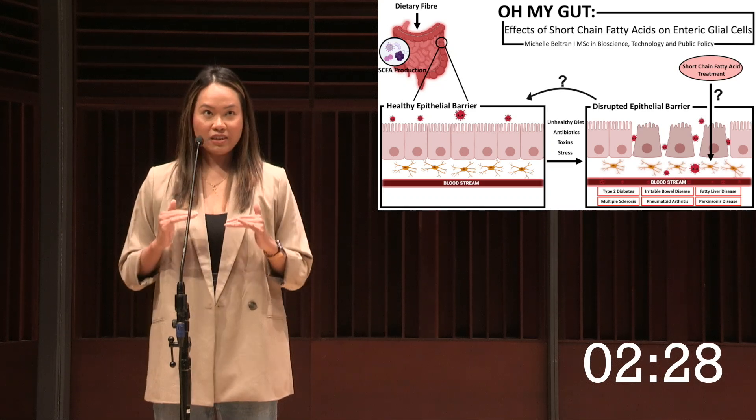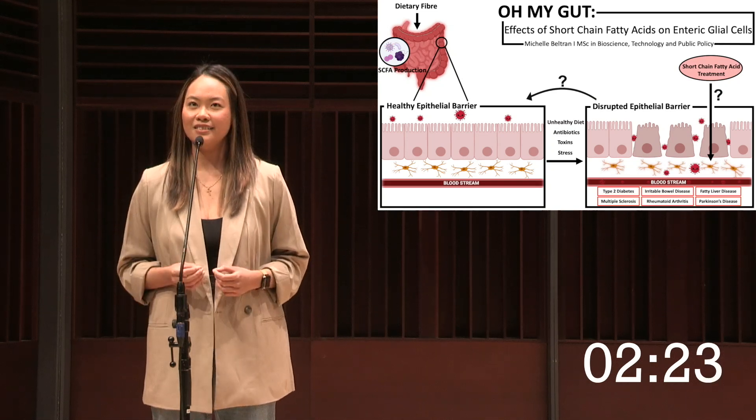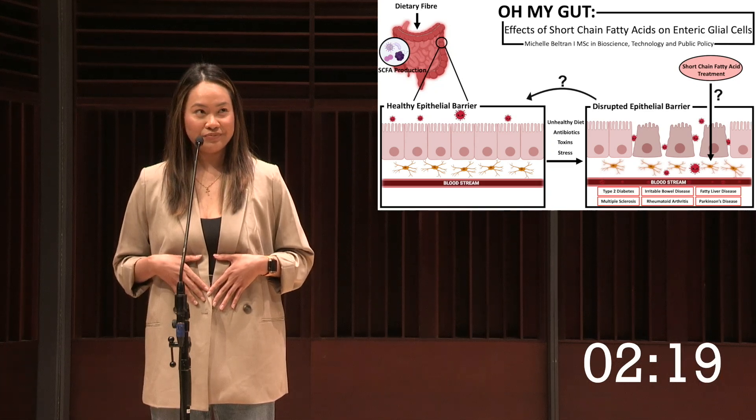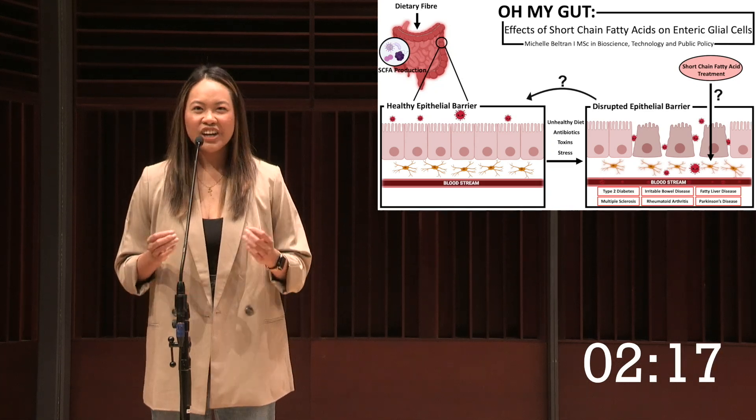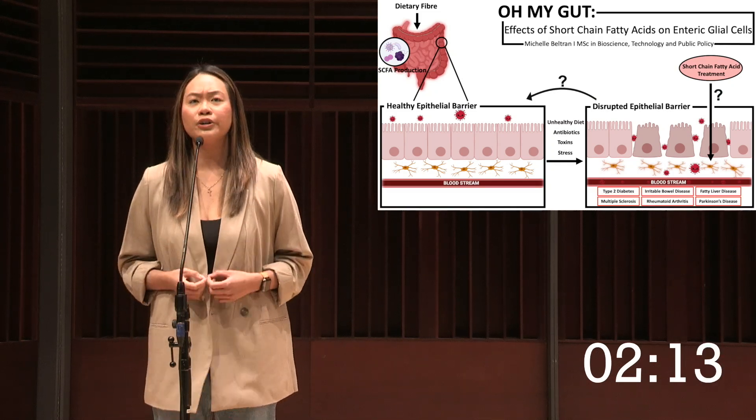Located beneath this epithelial barrier are star-shaped cells known as enteric glial cells, the main cell type found within our enteric nervous system. In a healthy gut, enteric glial cells produce factors that make our epithelial barrier stronger.